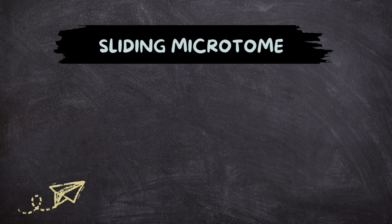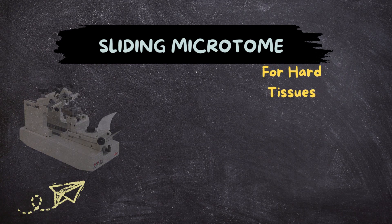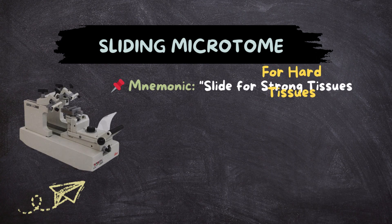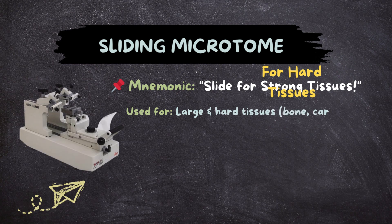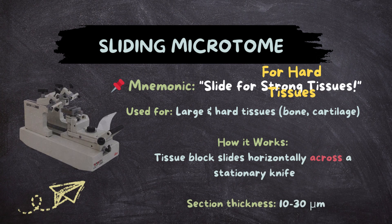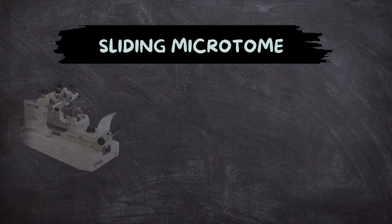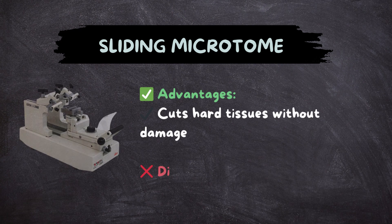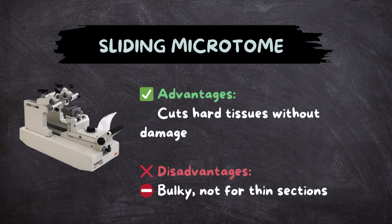Sliding Microtome — for hard tissues. Mnemonic: 'Slide for strong tissues.' Used for large and hard tissues like bone and cartilage. The tissue block slides horizontally across the stationary knife. Section thickness: 10 to 30 micrometers. Advantages: cuts hard tissues without damage. Disadvantages: bulky, not suitable for thin sections.